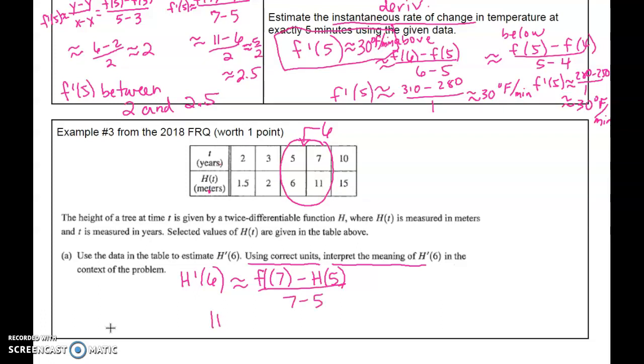So H'(6) is approximately H(7) - H(5) over 7 - 5. That's 11 minus 6 all over 2, which is 5 over 2. And our label is meters per year. That's the correct unit. But now we want to interpret that meaning.